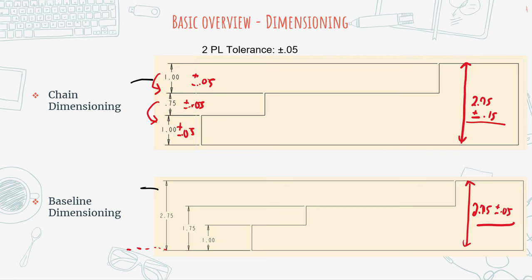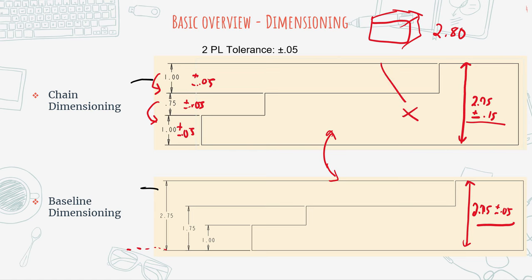An inexperienced drafter might not catch the difference between these two ways of putting dimensions on a drawing. But you can easily see how if you have a feature — say a slot — that only allows for a plate with a height of 2.8, then the chain-dimensioned part is potentially not going to work because it allows for a height of 2.9. But the baseline-dimensioned part will always work because it only allows for a maximum height of 2.8. This is a good example of why understanding GD&T and how you place dimensions on a drawing actually affects whether a part works or not.